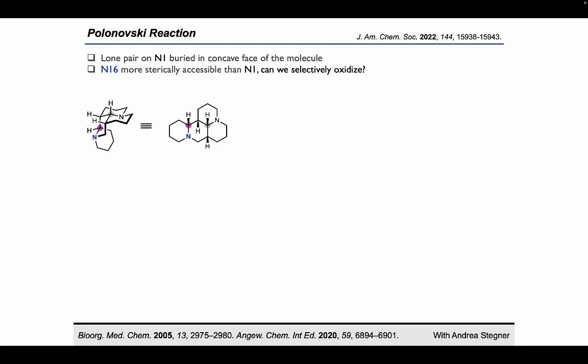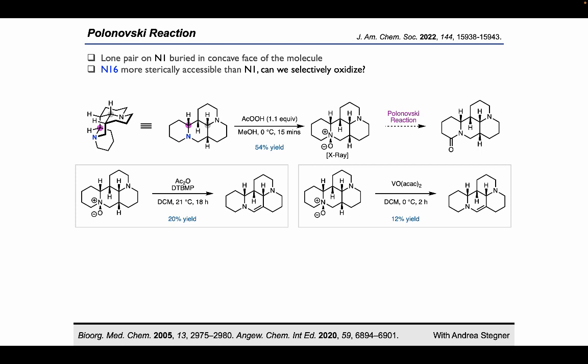The next thing we turned to was a Polonofsky reaction. From our research with the photoredox chemistry, we thought that we were accessing the least sterically hindered nitrogen selectively, and we found that we could indeed form the N-oxide selectively at that nitrogen atom in a 54% yield, and we figured a Polonofsky reaction could then give rise to the natural product. Unfortunately, using acetic anhydride, which was a traditional Polonofsky-type reaction, we got elimination at the undesired site, and when we switched to vanadiel-ACAC, we ended up also getting a lower yield of elimination at the undesired site. And we realized when we looked at the X-ray structure of the N-oxide that there's only a single hydrogen atom aligned perfectly anti-periplanar with the N-oxide to undergo elimination, giving rise to the products that we observe.